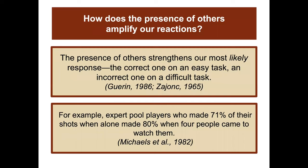The presence of others strengthens our most likely response — the correct one on an easy task, and an incorrect one on a difficult task. For example, expert pool players who made 71% of their shots when alone made 80% when four people came to watch them.